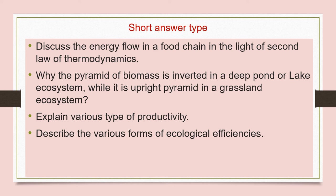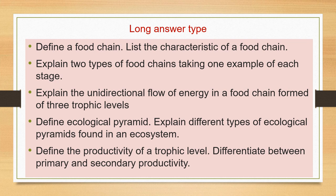The last question of category two is: describe the various forms of ecological efficiencies. The third category of questions are long answer questions. Question number one is: define a food chain and list the characteristics of a food chain. Next is: explain two types of food chains taking one example of each. Next is: explain the unidirectional flow of energy in a food chain formed of three trophic levels. Next is: define ecological pyramid and explain different types of ecological pyramids found in an ecosystem. Next is: define the productivity of a trophic level and differentiate between primary and secondary productivity.